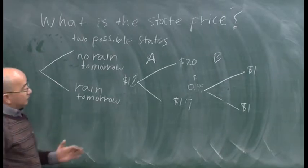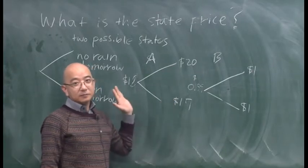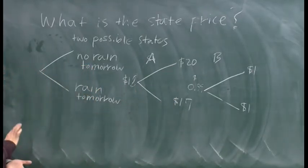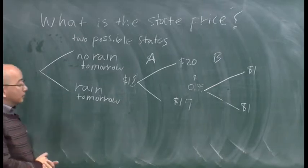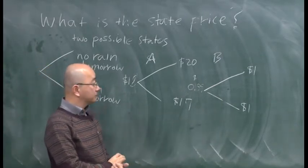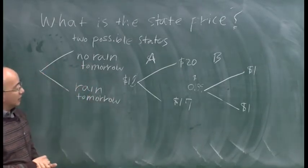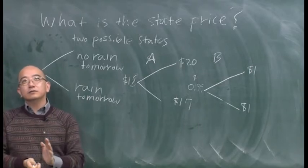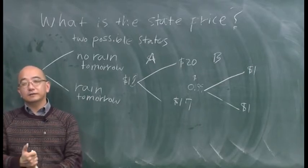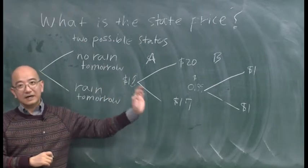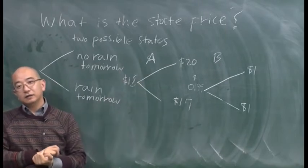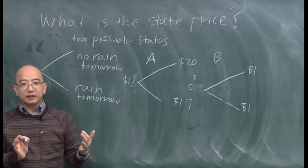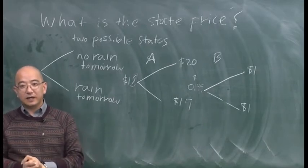Now why is it interesting? In this situation, if we have this much information, then any other asset you can think of, the price of any other asset can be determined completely from this information. Let's think about why before we get into the algebra. The reason is there are only two possible states in the future and you have these two assets. By combining these two assets A and B in different proportion, you can generate any possible payoff schedule as you like.